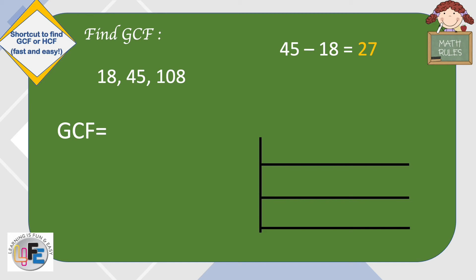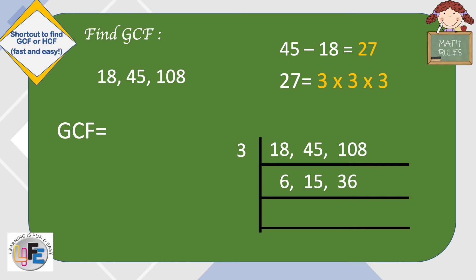The two lowest numbers will always give you the least difference. The lowest two numbers here are 45 and 18. When you get the least difference, find the prime factors of this number. Then divide the given numbers by each factor. If the factor is divisible by the given numbers, retain that number. If not, cross it out from the list.